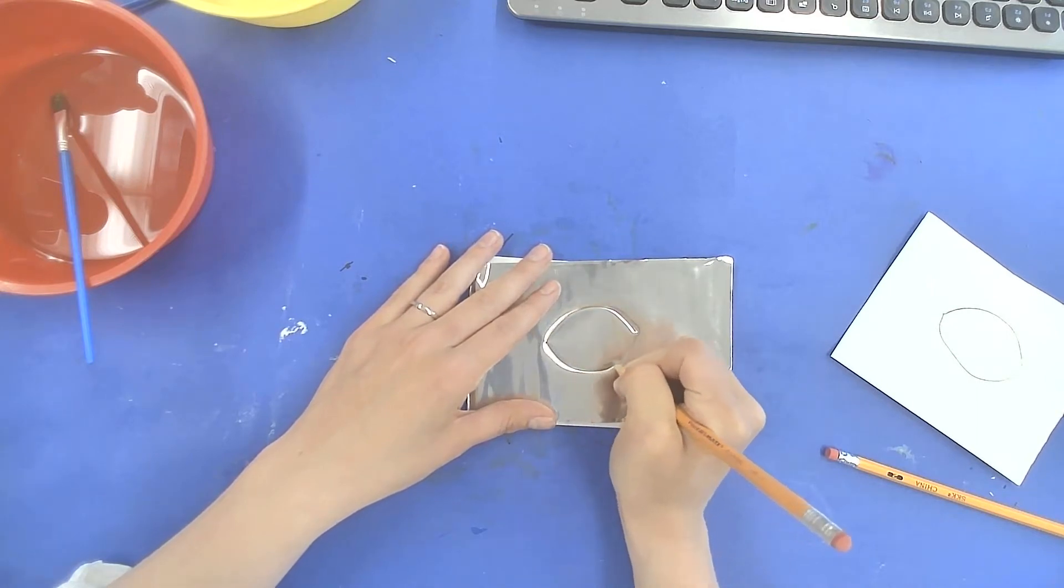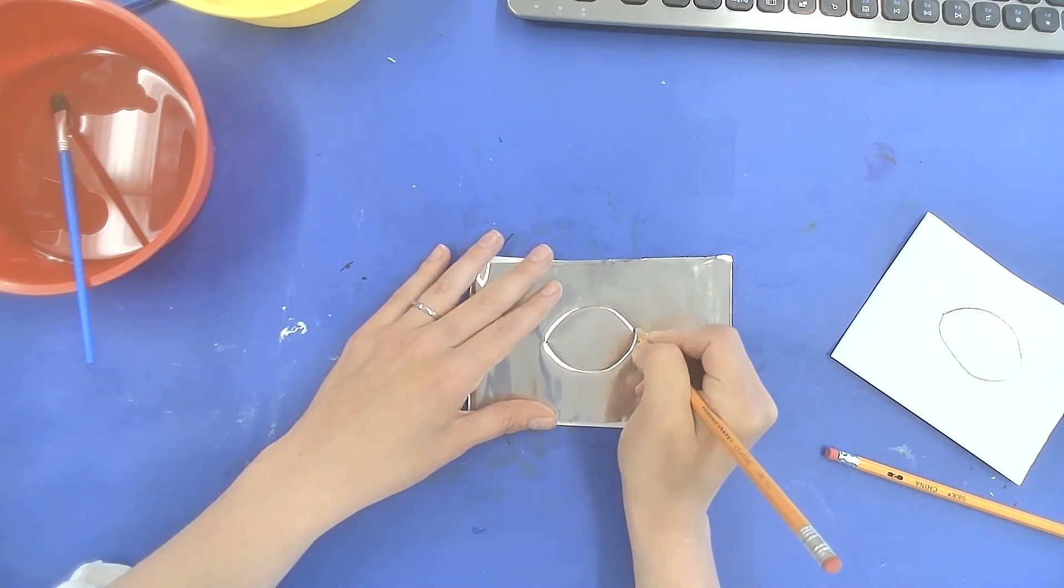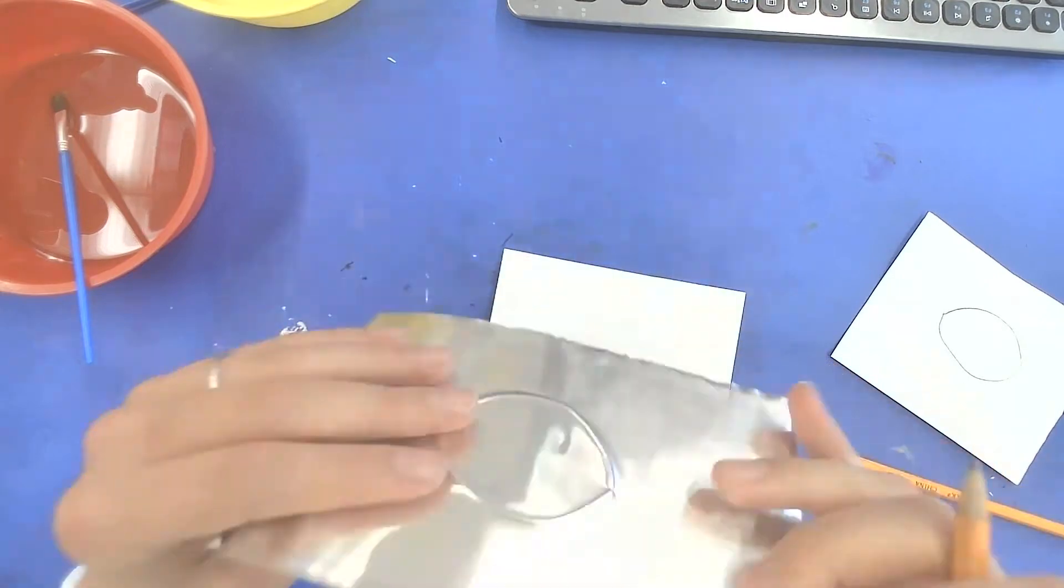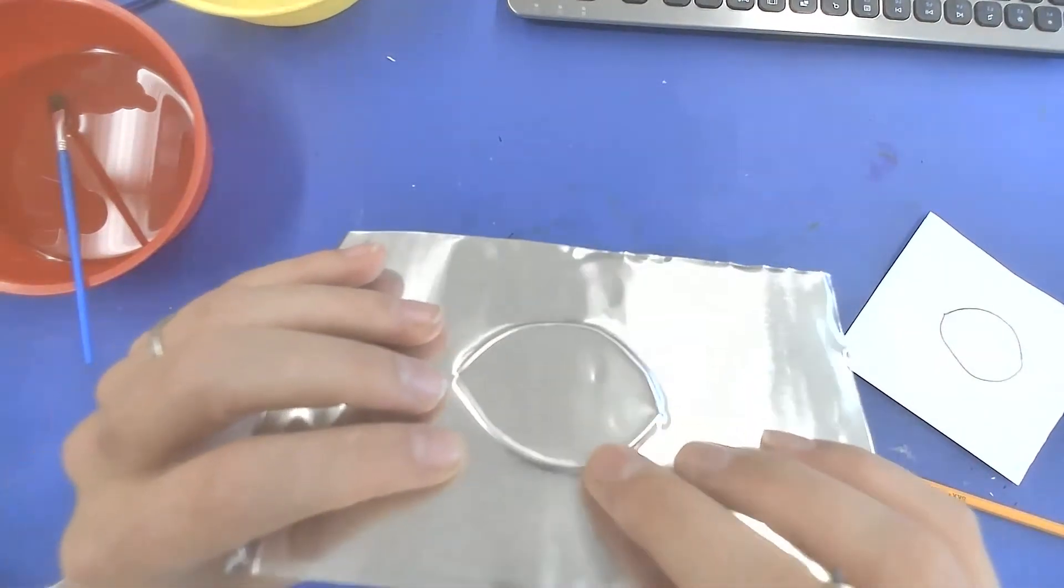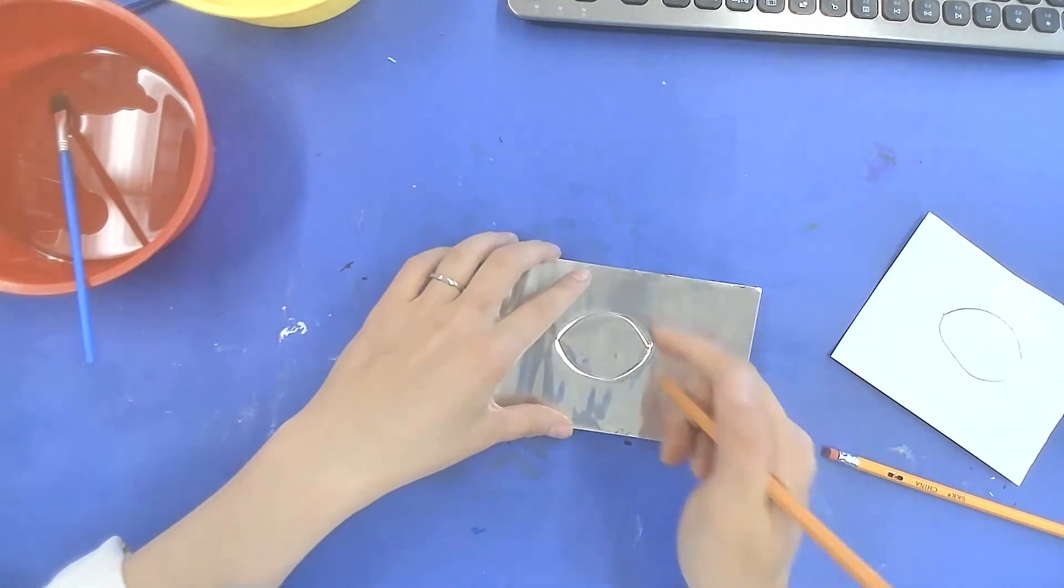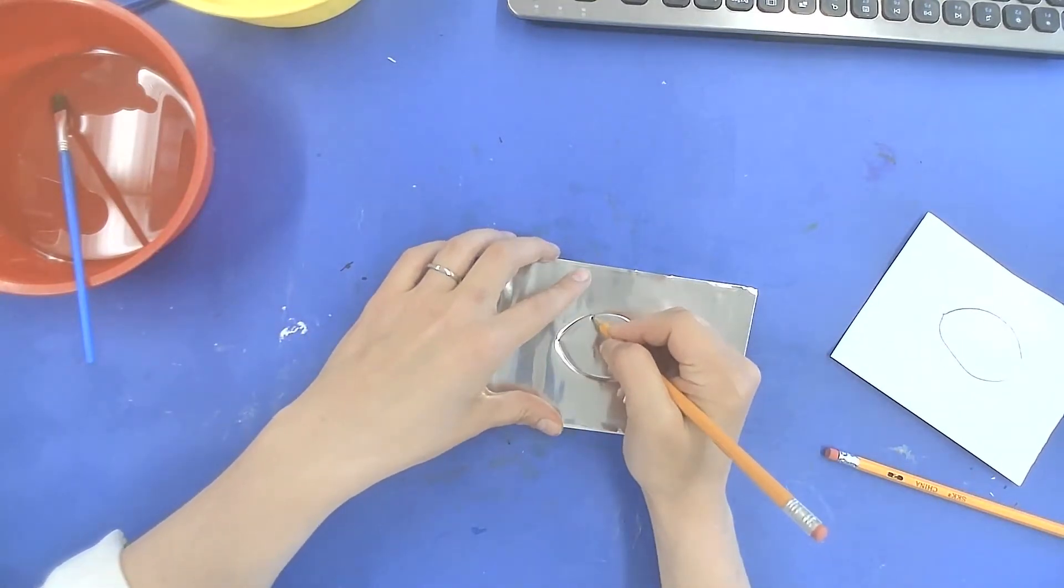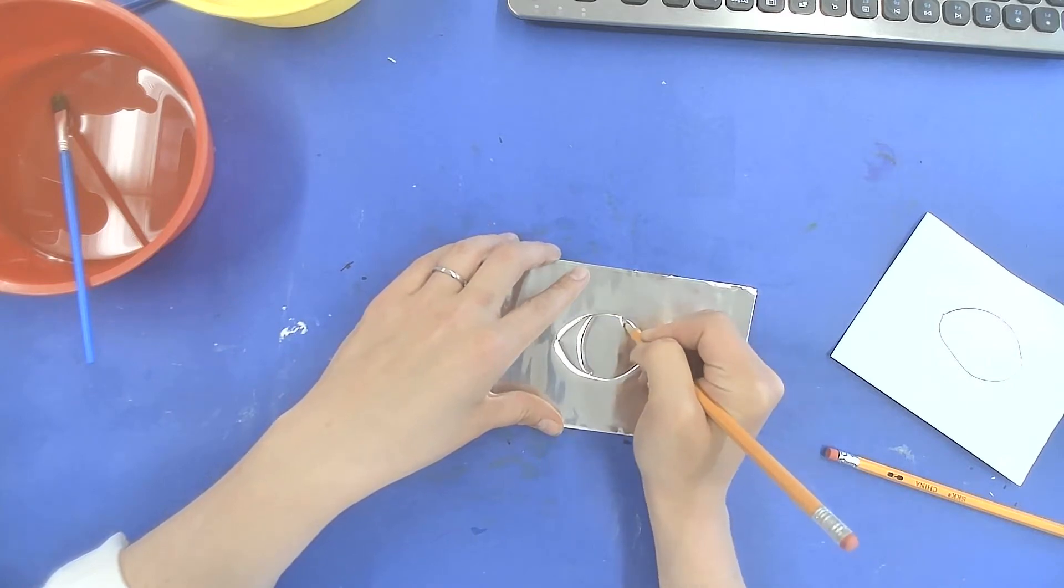I'm going to make that line pretty deep and if I flip it over you'll see that it pushed the metal up here on this side. Now once we have this we're going to create the center of the eye which is going to be kind of like a parentheses. Two curved lines like this.